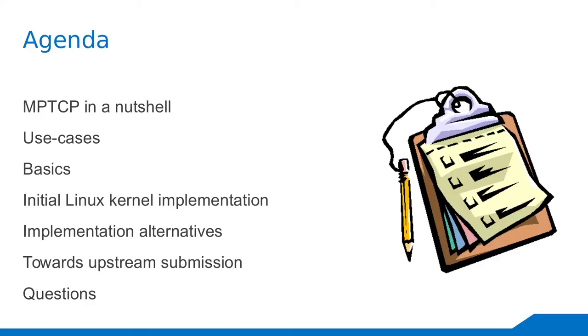Basically, the existing implementation and then some of the work we did to make it more clean and make it have fewer changes to the TCP stack. My objective for this talk is to keep it short and then to have some sort of a discussion to get your feedback and to see what is the right way, what we can do to slowly get to that point where we can merge multipath TCP upstream.